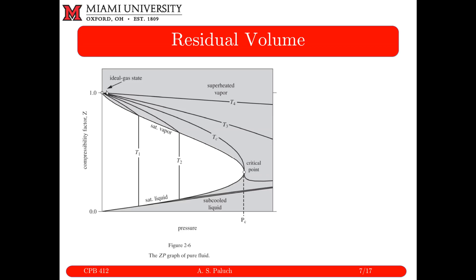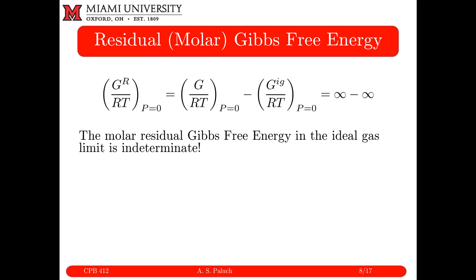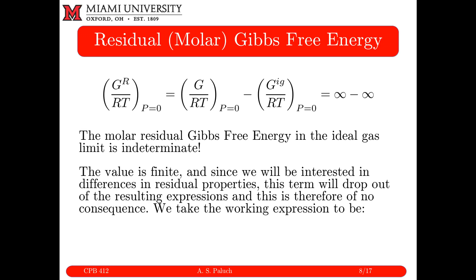Residual volume is finite and non-zero in the ideal gas limit, unlike residual enthalpy, entropy, and internal energy, which are all zero in the ideal gas limit — making molar volume an exception. The other tricky one is residual molar Gibbs free energy: in the ideal gas limit, the dimensionless molar Gibbs free energy is negative infinity, but the residual is finite.